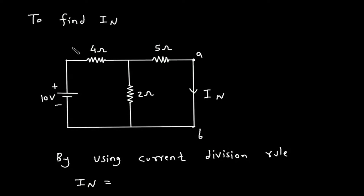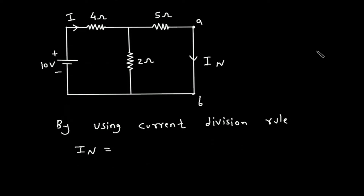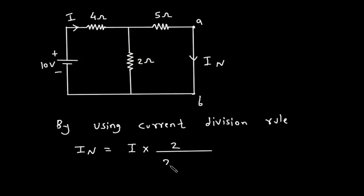By using the current division rule, In is equal to — let's say the total current is capital I. So according to the current division rule formula, In is equal to total current I multiplied by the opposite branch resistance. The opposite branch to this In current is 2 ohm, divided by 2 ohm plus 5 ohm.